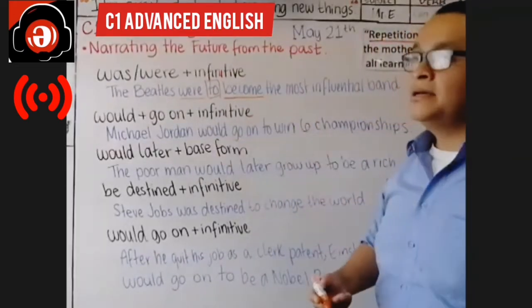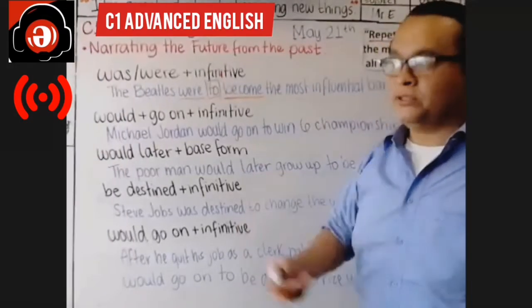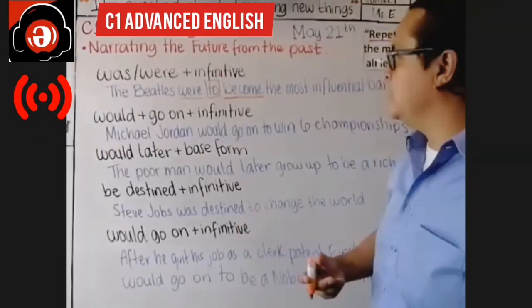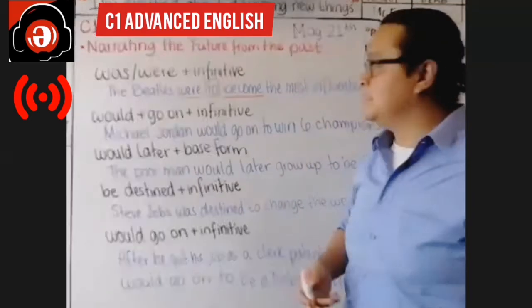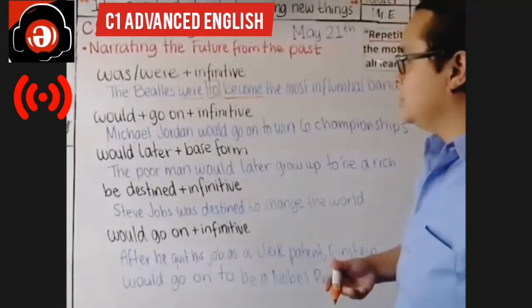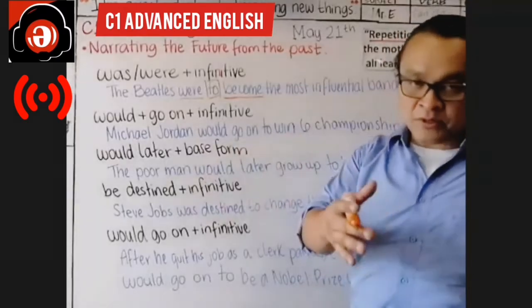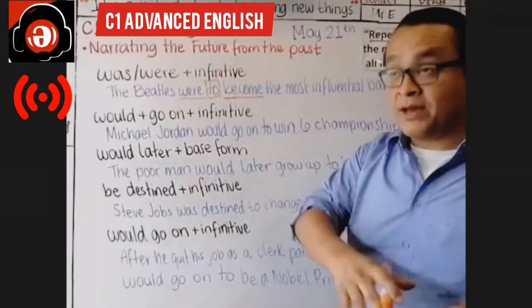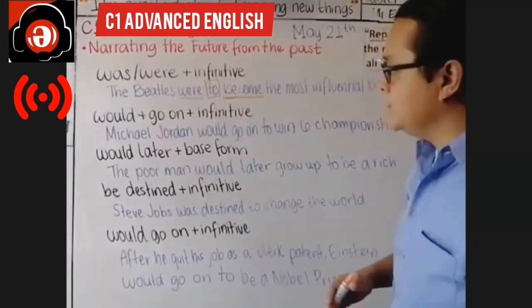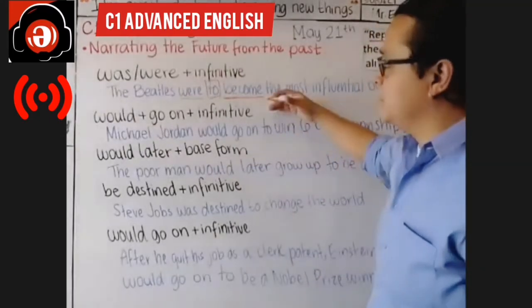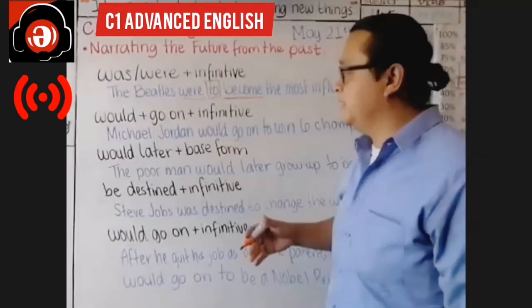So with that structure you can say: they were to become a super influential band, they were to become super rich, they were to become incredibly famous, and so on. That's a structure we can use to talk from a perspective in the past about the future.